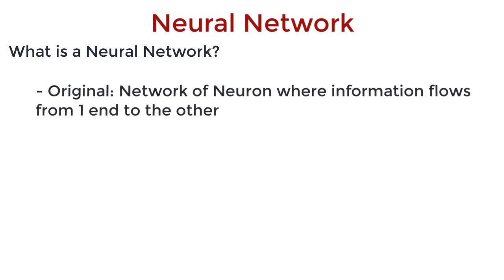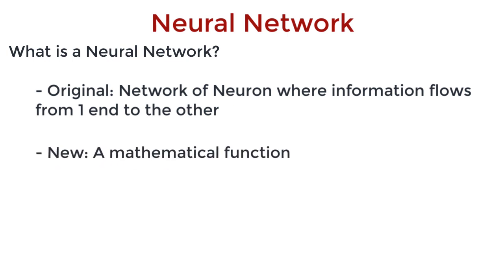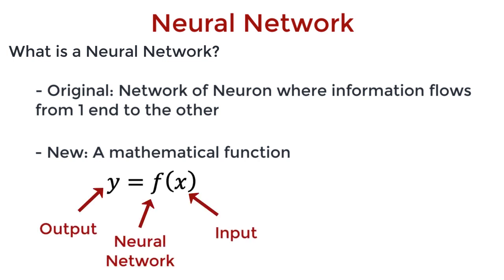So back to square one. What is a neural network? Our original answer? It is a network of neurons where the information flows from one end to the other. But it is also simply a mathematical function. Like how we say y is equal to f of x. Here, x is the input, y is the output, and f is just some function. This function has one main property. It is smooth. Or it's differentiable.